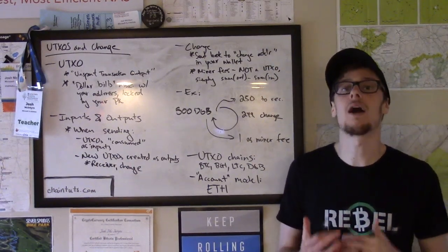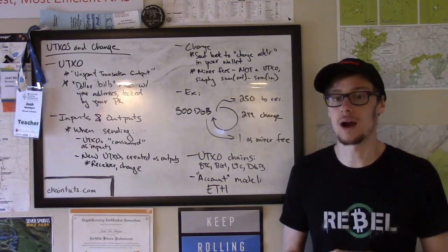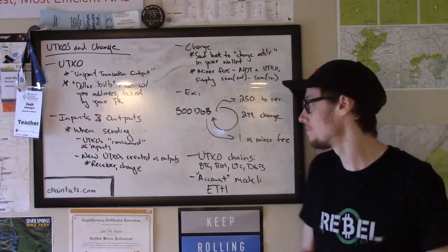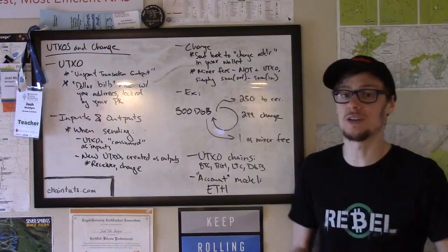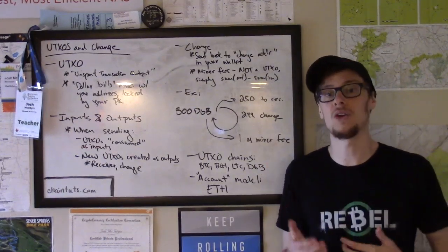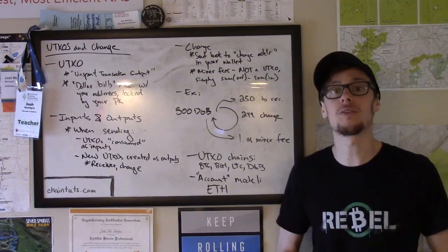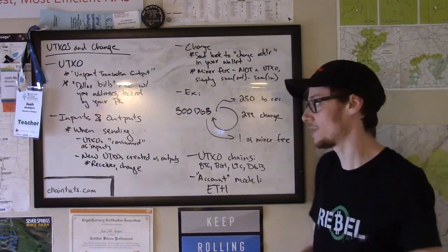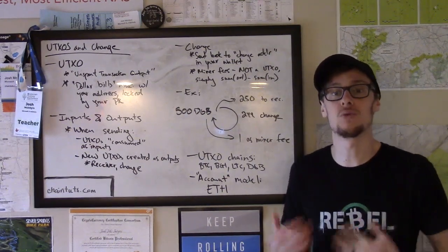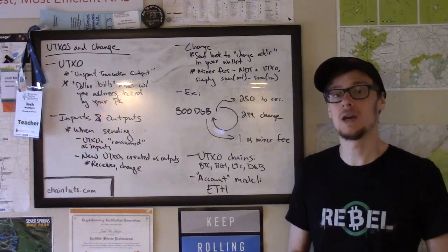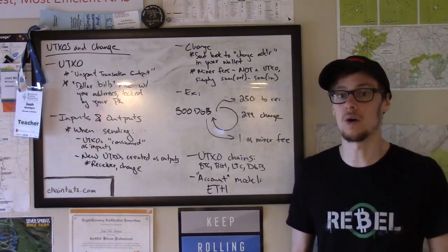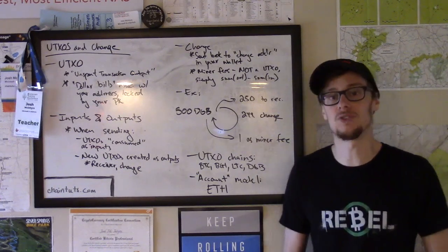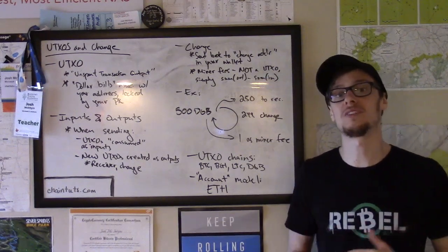Let's look at a concrete example using Digibyte, a popular UTXO blockchain. Let's say you have 500 Digibytes in your wallet in one UTXO — at some point, somebody sent exactly 500 Digibytes to your wallet, maybe a friend or an exchange where you bought it. There is one 500-Digibyte UTXO in your wallet, and in this case we want to send 250 Digibytes to a friend, who will be the receiver in this transaction.